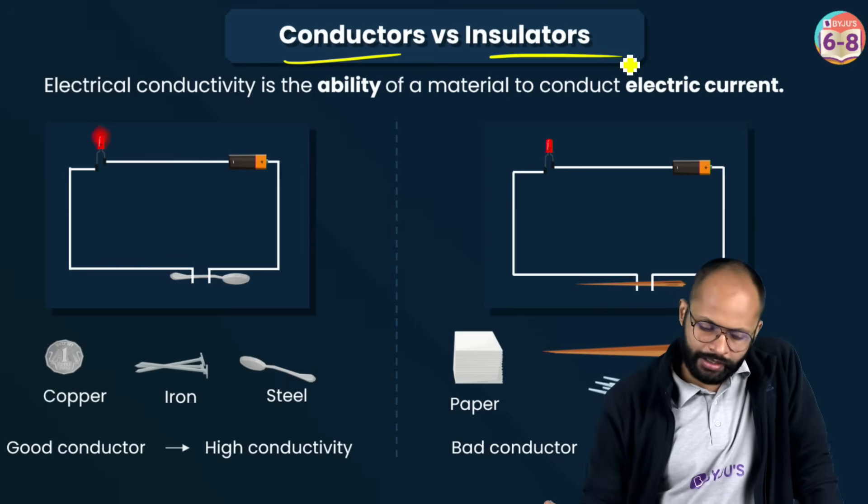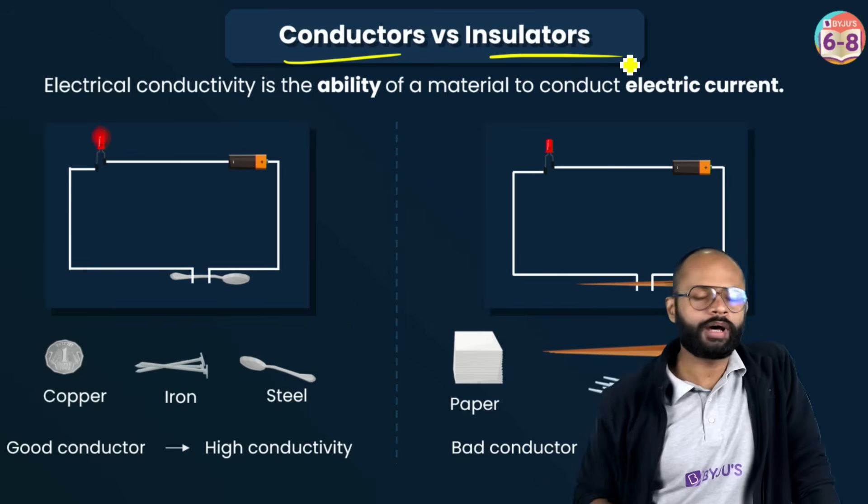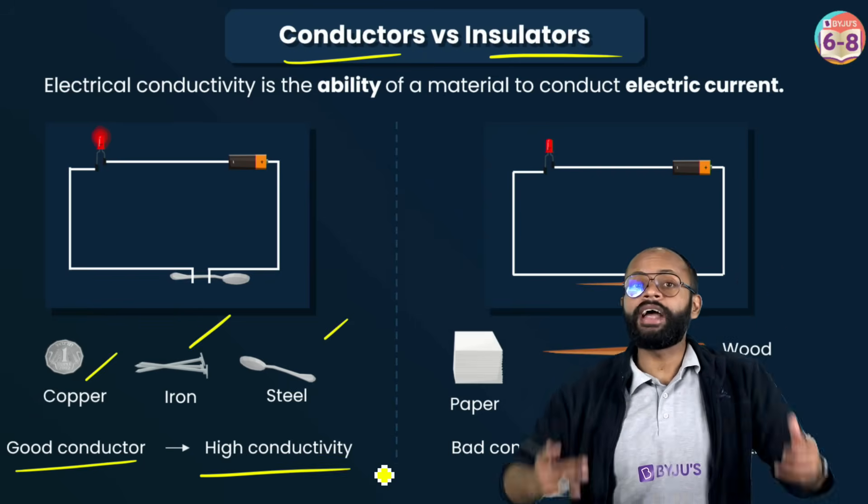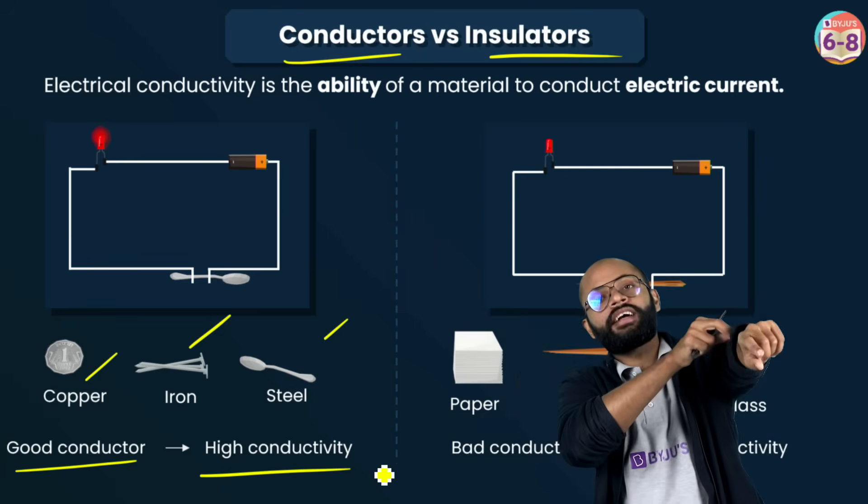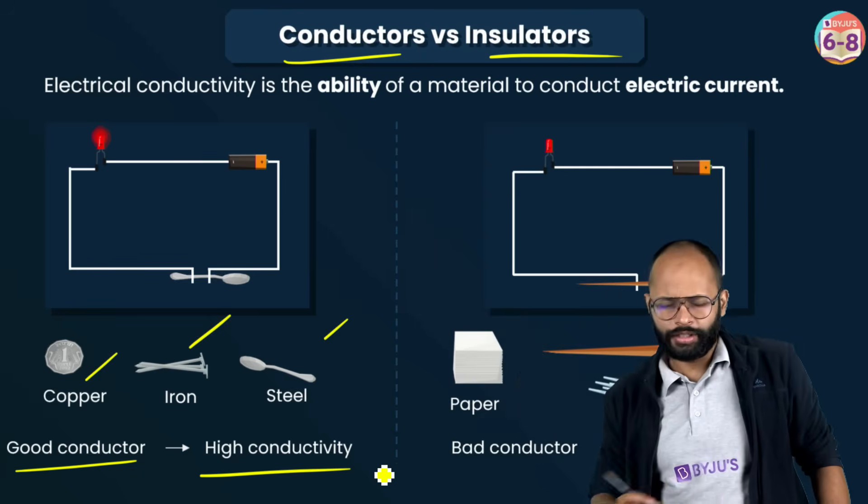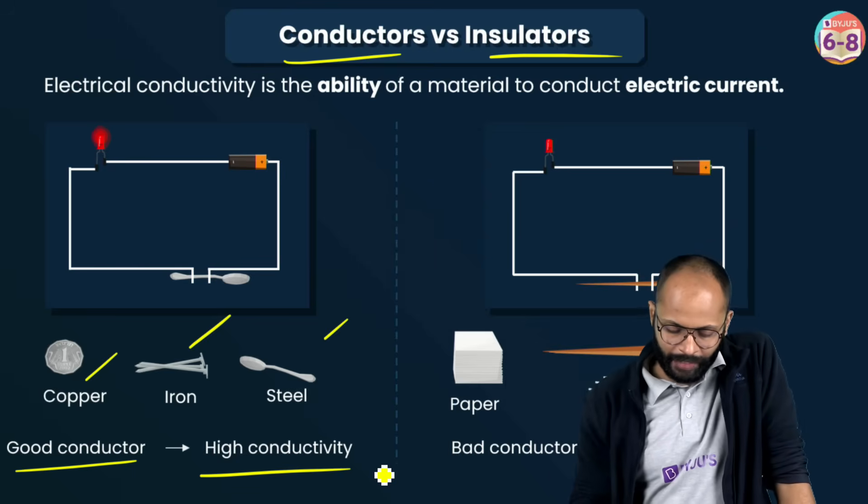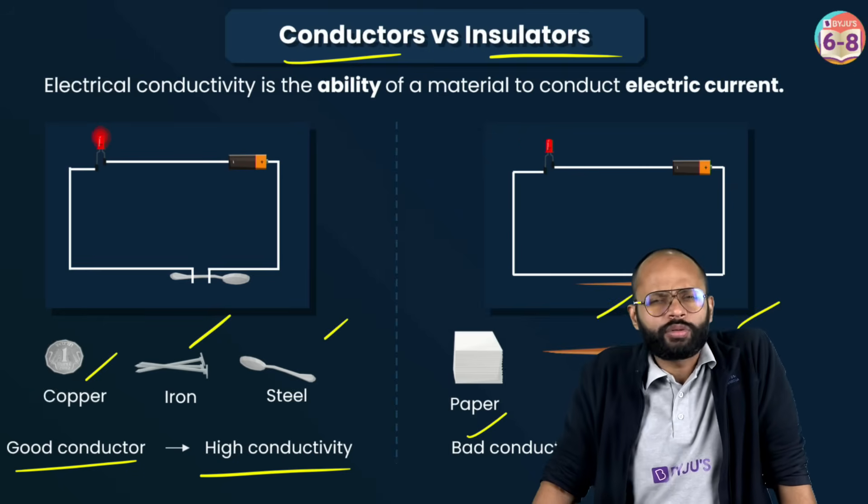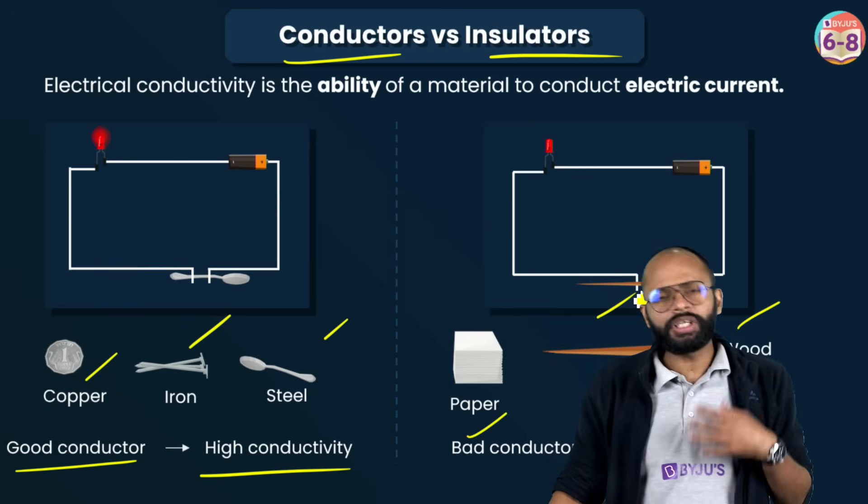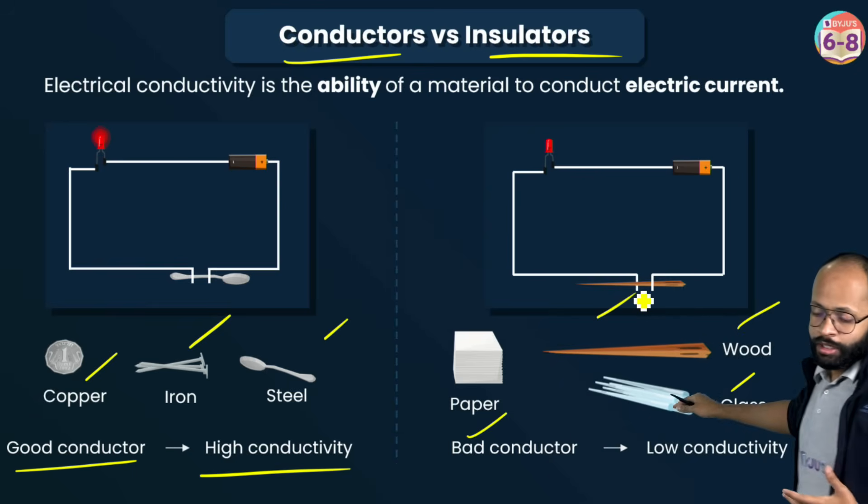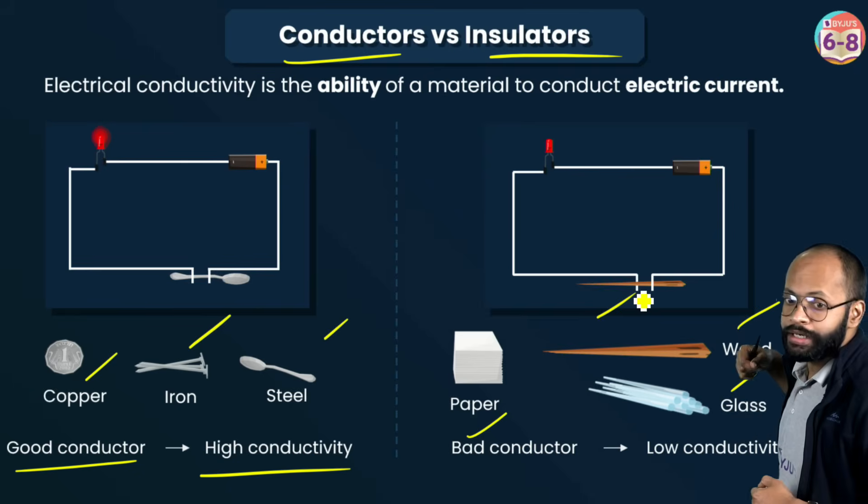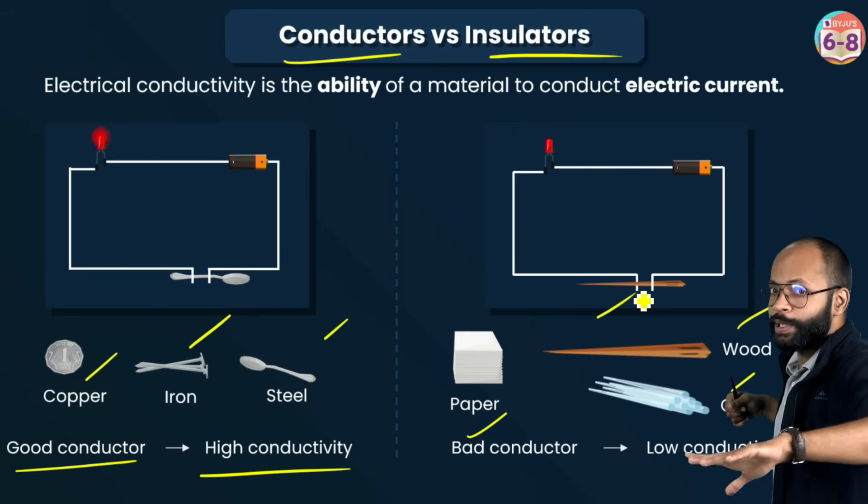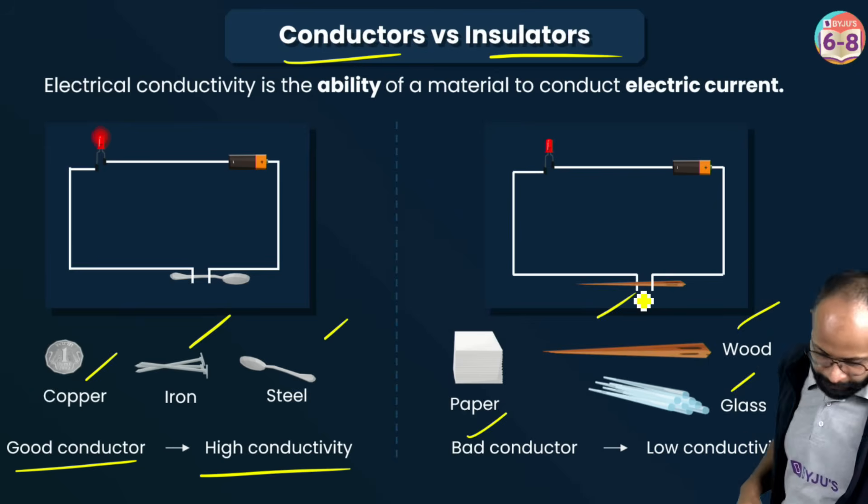Conductors versus insulators. Materials which allow current to pass through them are called conductors. Think of metals: copper, iron, steel. Good conductors have high conductivity. Materials which do not allow current to pass through them are paper, wood, glass. All these are insulators or bad conductors. Bad conductors or good insulators have low conductivity.